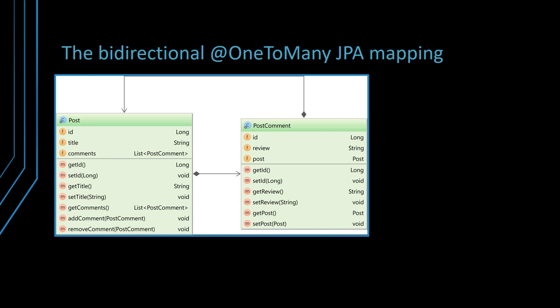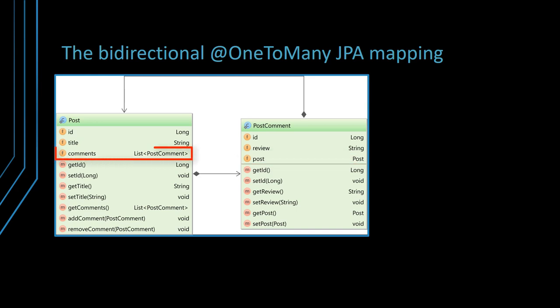Let's discuss the bidirectional one-to-many association since it is an extension of the already presented many-to-one JPA mapping. From an object-oriented perspective, the relationship looks like in the following class diagram. The post comment has a reference to the post entity via the post property, while the post entity has a list of associated post comment entities. Therefore, the association can be navigated in both directions.